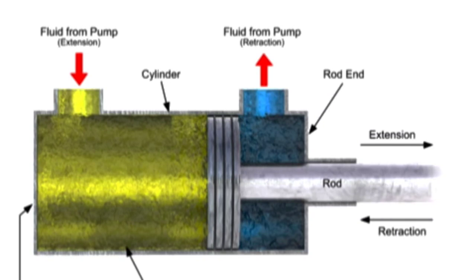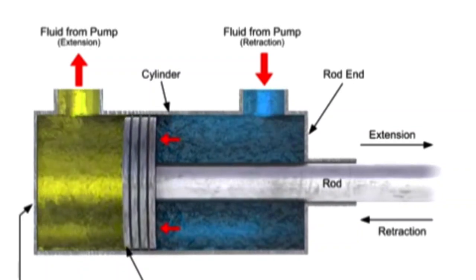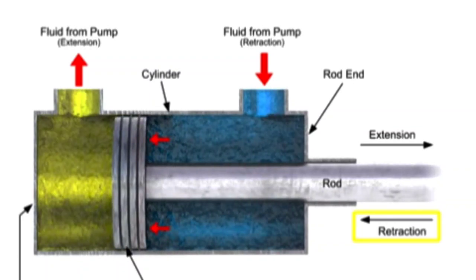When the directional control valve is shifted, it sends fluid into the rod end port, out of the blind end port, and back to the tank. Pressure builds up and generates a force on the other side of the piston, causing the retraction stroke.